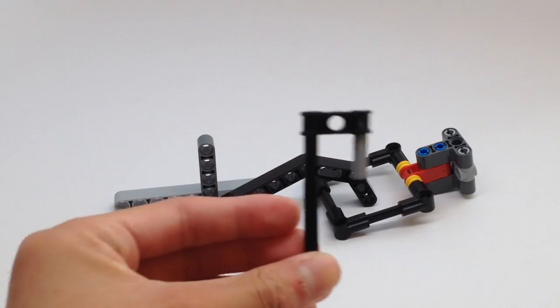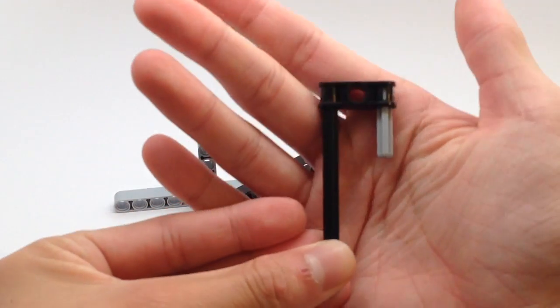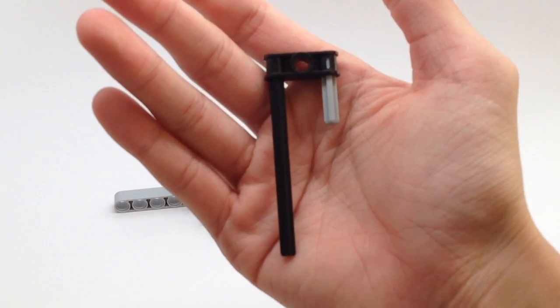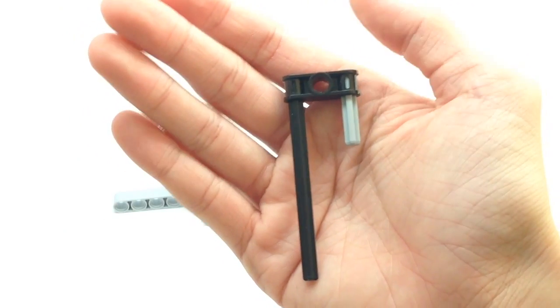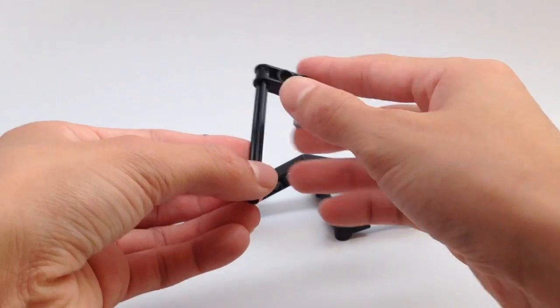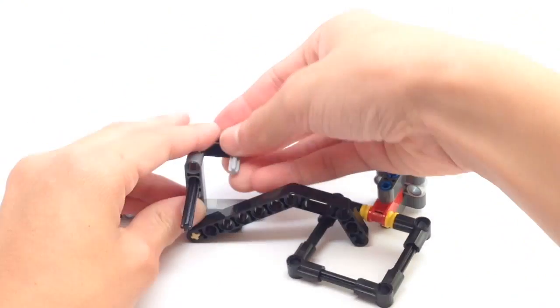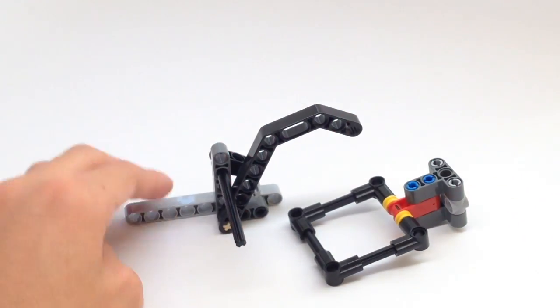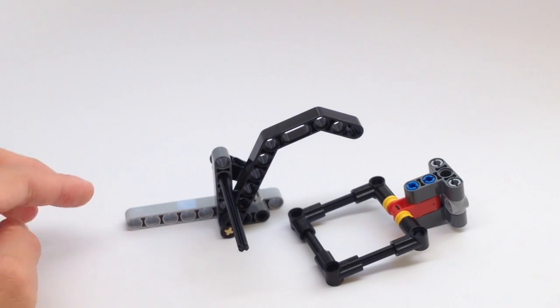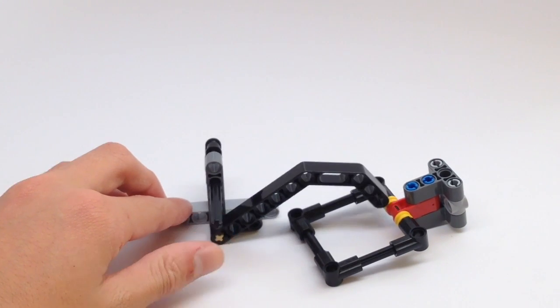Now this is where the hook comes in. You can build a hook really easily, usually with very few pieces as shown here. So what we can do is thread it through this piece like so.